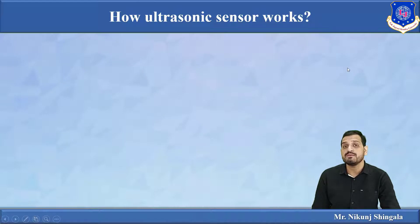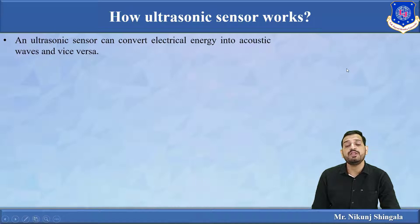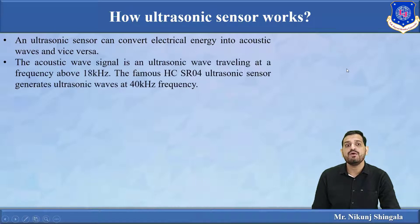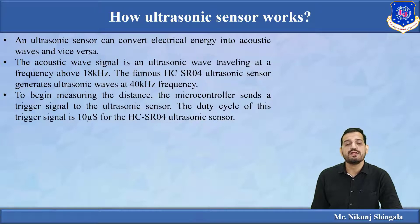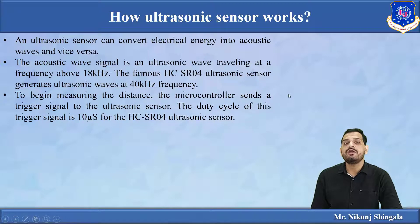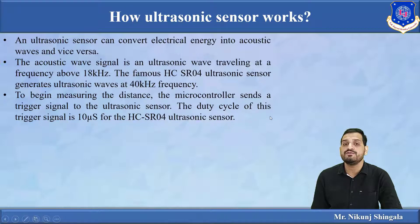The ultrasonic sensor converts electric energy into acoustic waves and vice versa. The acoustic wave signal is an ultrasonic wave traveling at a frequency above 18 kHz. In the case of HC-SR04, it can generate ultrasonic waves beyond 40 kHz frequency. For distance measurement, the controller first sends a trigger signal to the ultrasonic sensor. The sensor consists of 4 pins, one of which is the trigger pin. The microcontroller sends a high signal to the trigger pin for 10 microseconds.